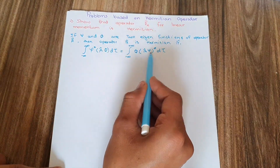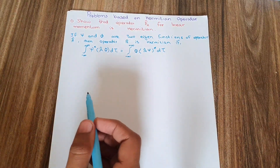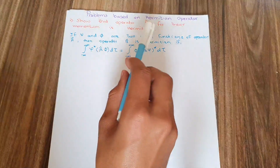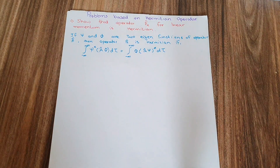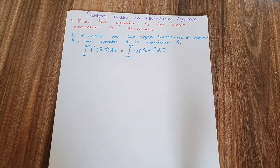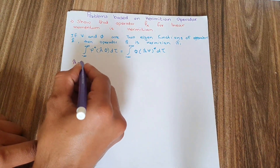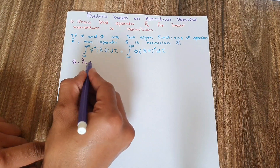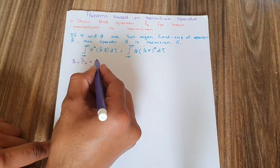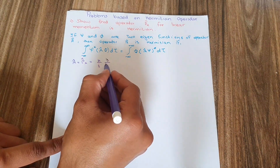I need to prove that the operator for linear momentum is a Hermitian operator. To do this, I take operator A to be equal to the linear momentum operator. The value of the linear momentum operator is h-bar over i times the partial derivative with respect to x, that is (ℏ/i)(∂/∂x).